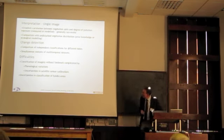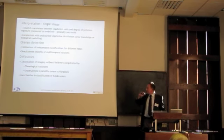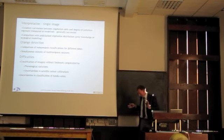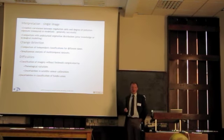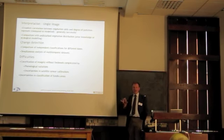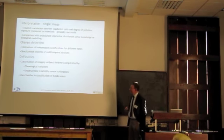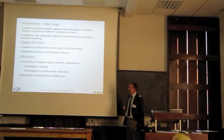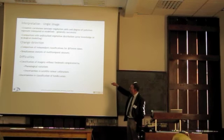There are some problems with change detection. What typically happens is that you have an image from now, which you calibrate with field data that you get now, and you have an image from 20 years ago, and then you think to yourself: wouldn't it be nice to go 20 years into the past and actually see how the vegetation distribution was then? That's not often possible. Sometimes you can find a sufficiently detailed vegetation map that was compiled at that time, but usually you're in a situation of having to guess. Classification of imagery without fieldwork is complicated.